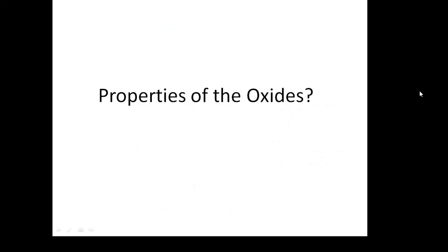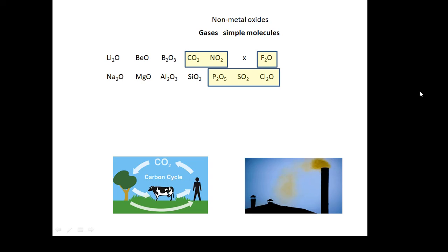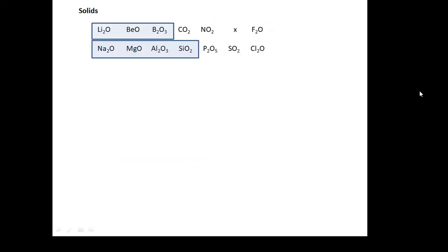Properties of the oxides. So first of all the non-metal oxides. Non-metal oxides are gases. They are simple molecules, carbon dioxide, nitrogen dioxide, sulfur dioxide. They are simple molecules, they are gases. So non-metal oxides are gases. These ones, metal oxides are solids.